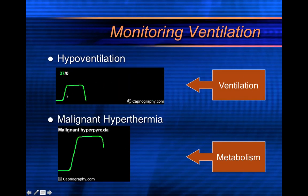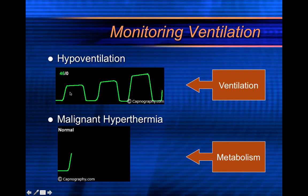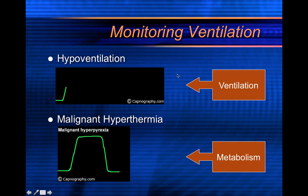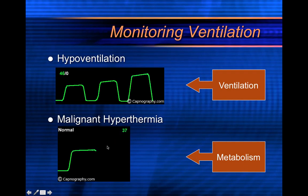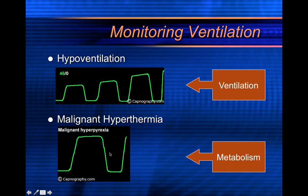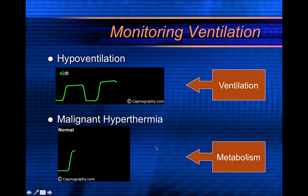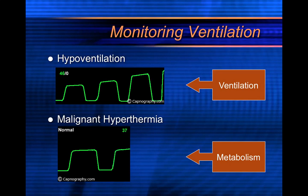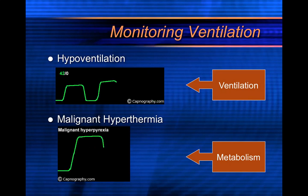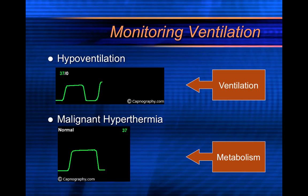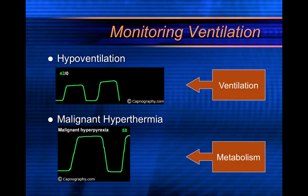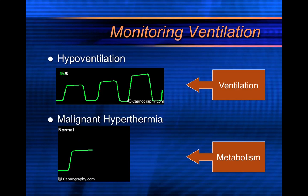Here's a visual of hypoventilation — breathing slower causes end-tidal values to rise. Regarding metabolism, malignant hyperthermia — or hyperpyrexia — also causes an increase in end-tidal CO2 values. Malignant hyperthermia is a concern during RSI procedures using succinylcholine, a depolarizing paralytic. It produces a higher capnography reading. So remember the triad: ventilation, metabolism, and cardiac output/circulation.